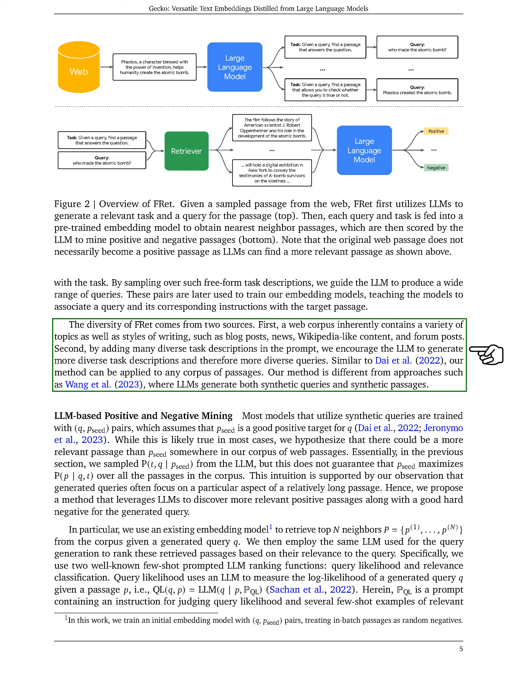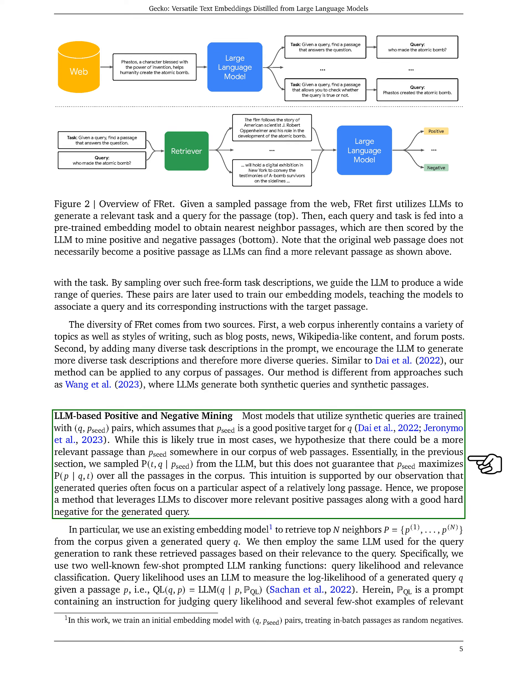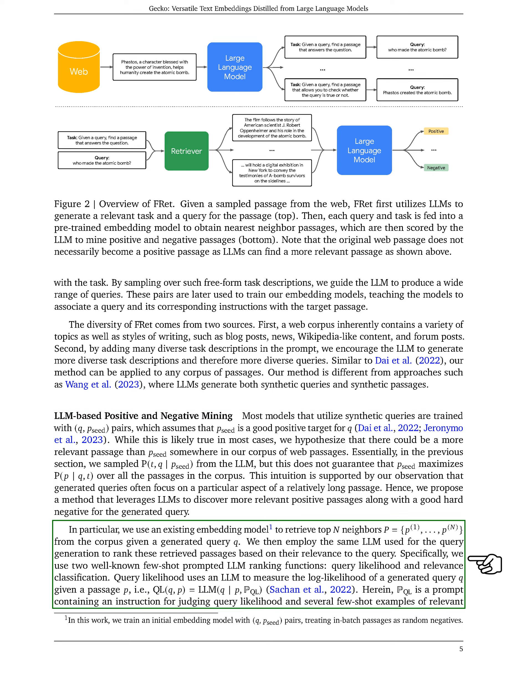We work on improving the positive and negative mining process using LLM-based methods. Most models trained with synthetic queries assume that a specific seed passage is a good positive target. However, we believe there might be even better passages in our dataset. To address this, we propose a method that uses LLMs to find more relevant positive passages and hard negatives for generated queries. We start by retrieving the top similar passages from the dataset for a generated query using an embedding model.